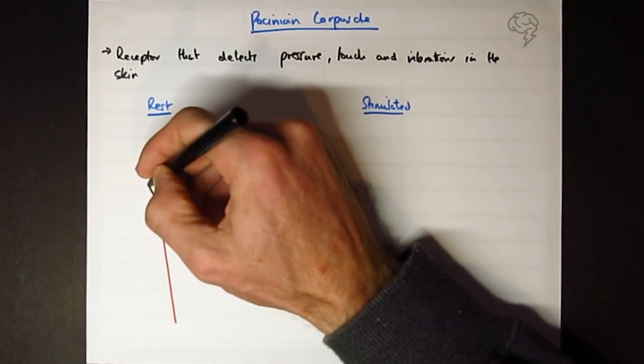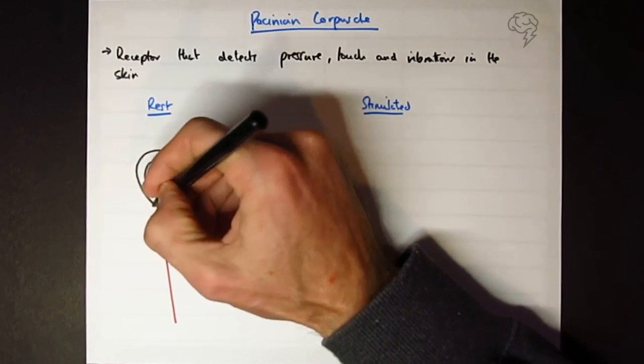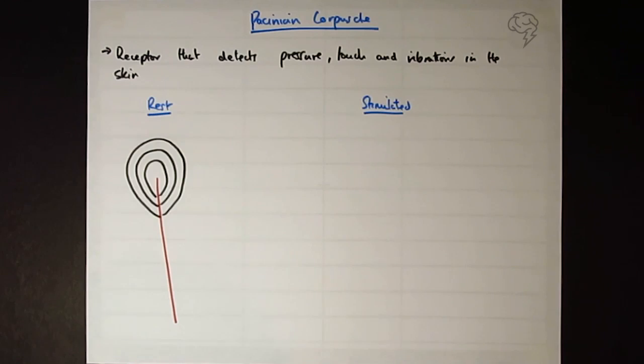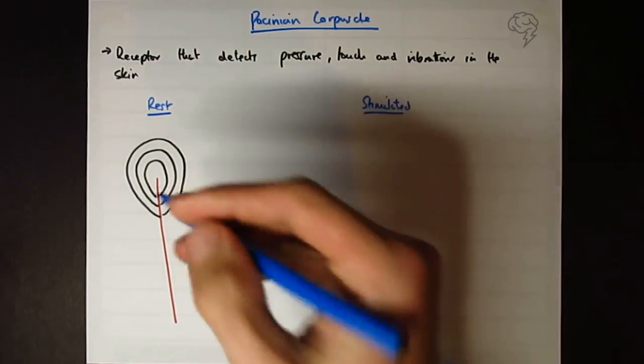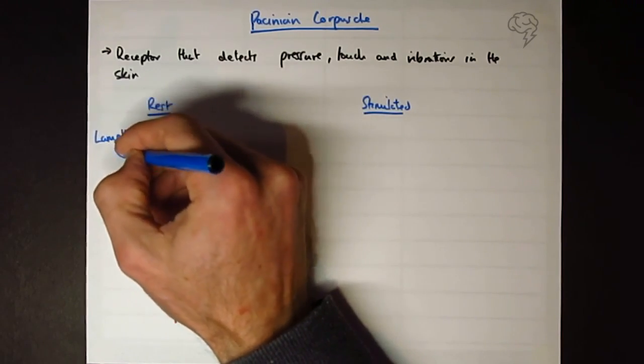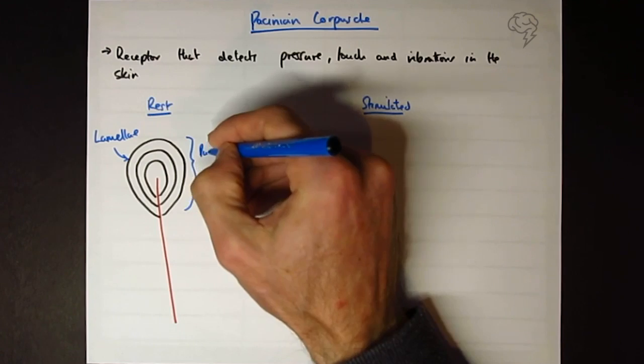On the end of the sensory neuron is the receptor, and that is going to look a little bit like contours around the hill. These are called lamellae, and they're concentric rings of fibrous tissue. This whole end here, the receptor, this is the Pacinian corpuscle.